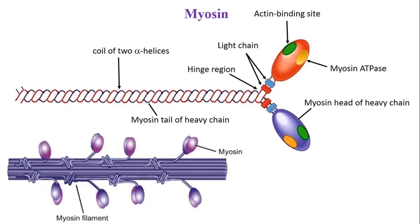Many such myosin molecules unite together to form the myosin filament, as shown in the lower diagram. The myosin filament has many heads projecting away from the main molecule in all directions — throughout 360 degrees.